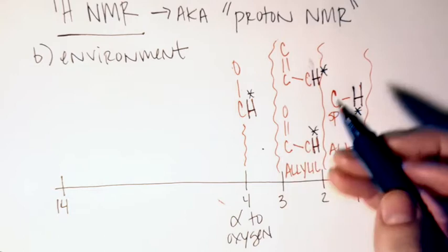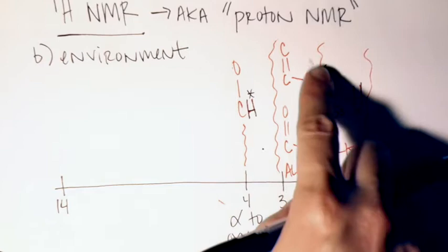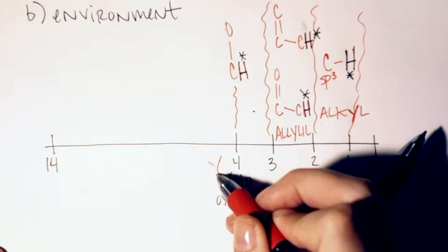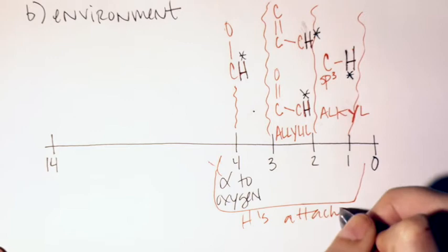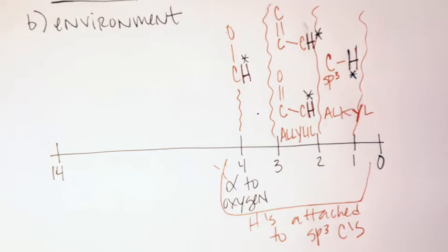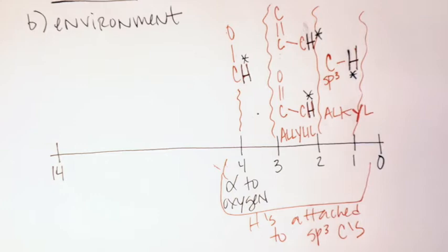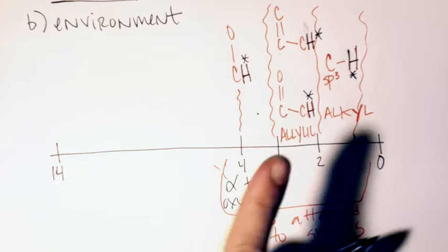The point is those will be more deshielded than the alkyl ones. In the one-to-four region, all of these H's are attached to SP3 carbons — just with different things attached to those carbons, or nothing special. These ones have stuff in the alpha or beta position. To get further downfield, you need an H attached to an SP2 carbon.